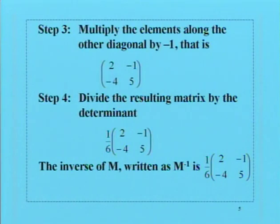Step 4: Divide the resulting matrix by the determinant. The matrix (2, -1, -4, 5) is divided by the determinant, which is 6. It can be expressed as 1/6 of (2, -1, -4, 5). So the inverse of matrix M, written as M^-1, is 1/6 of (2, -1, -4, 5).